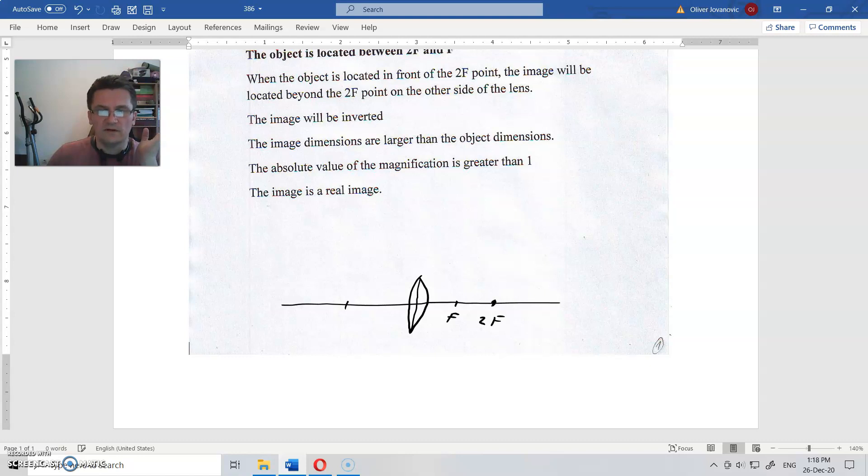And because of that it needs to be two times here, so focal points are the same on both sides. And now we have a lens, a converging lens. What is the meaning of a converging lens?